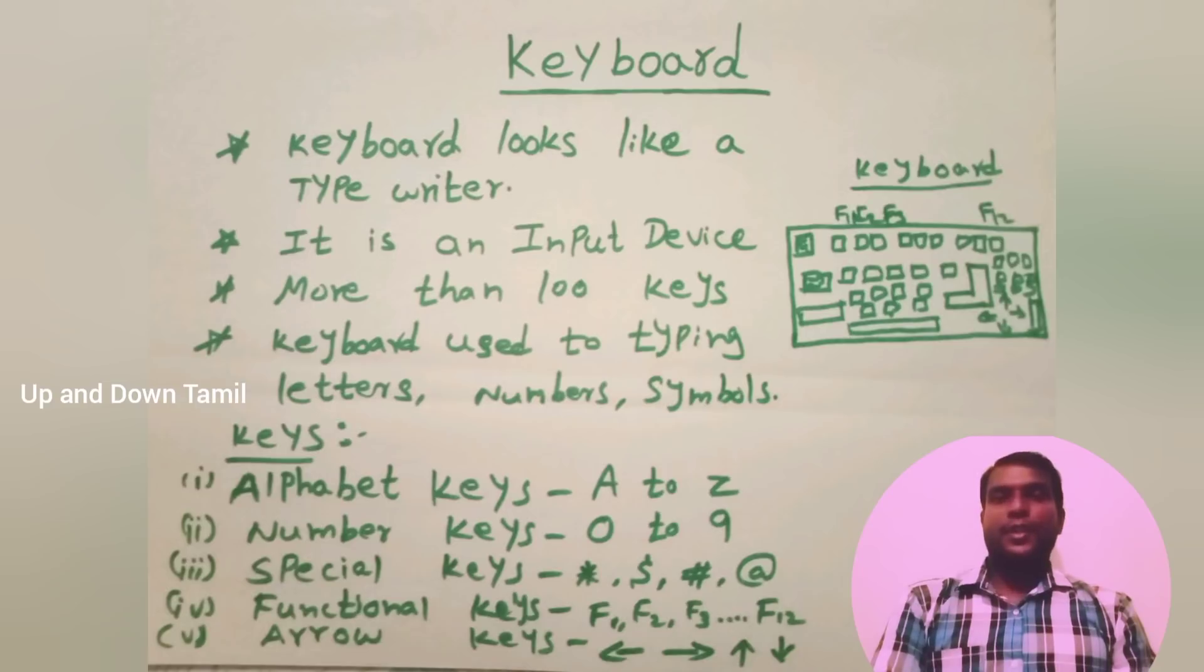And the fifth keys is arrow keys. You'll all see in the keyboard, right corner, bottom right corner, you see four arrow keys: up arrow, down arrow, right arrow, left arrow key. These are the four arrow keys.